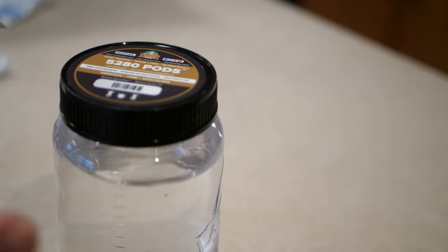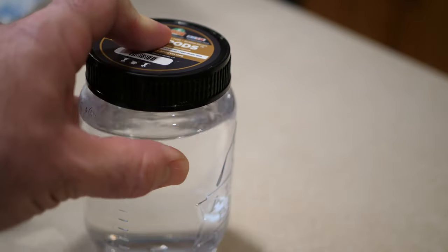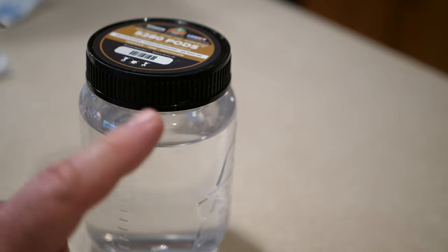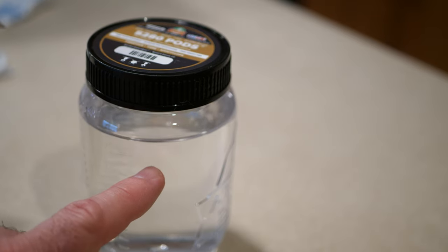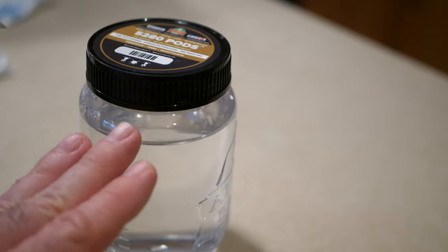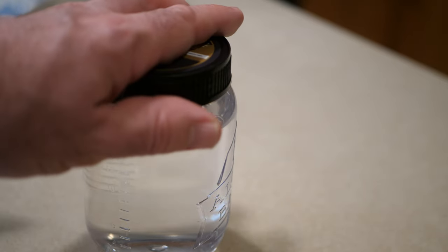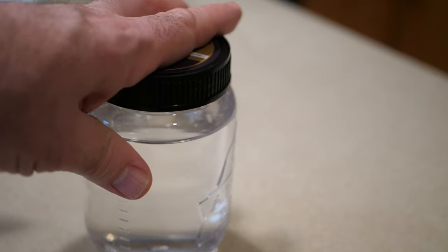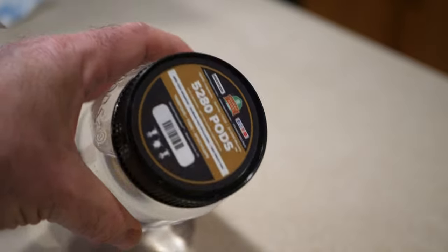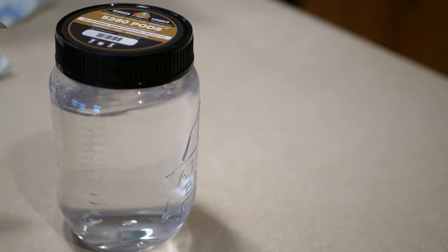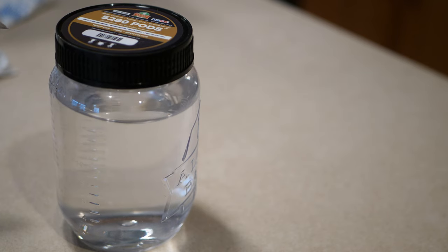So what I'm going to do is float this in the sump so the water temperature will match my aquarium. Then it's important to turn off all the pumps, open the jar at night with your lights off, and dump the entire contents in your aquarium. This will give the pods a chance to settle into the rock, into the sand, and move around. And your fish won't eat them. It gives them a chance to hide.